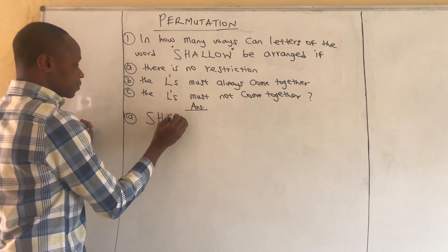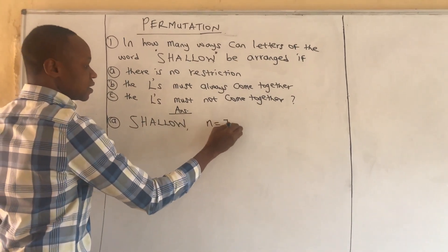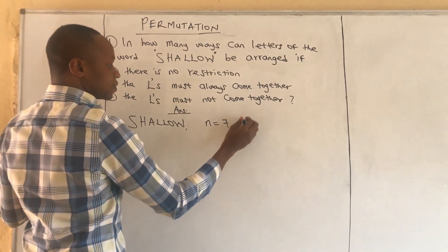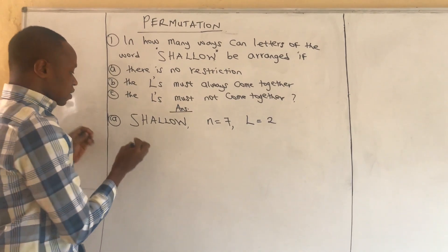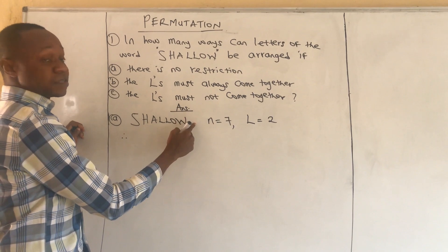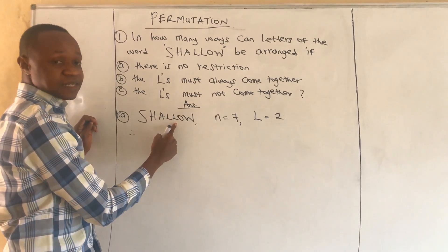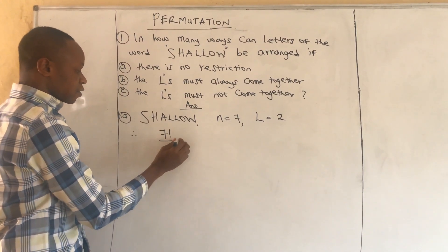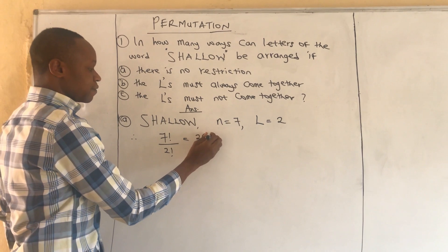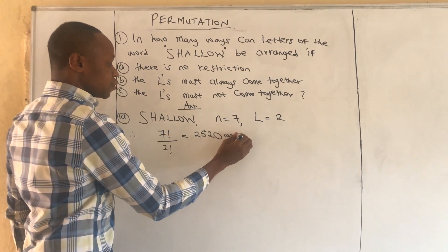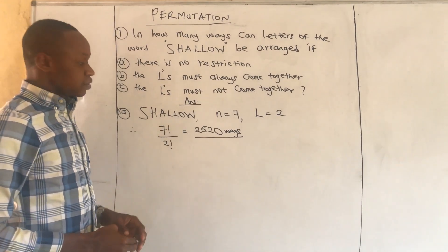Looking at 'shallow', it has seven letters, and out of these seven, L is repeated — L appears twice. To arrange letters of this word without restriction when you have a repeated letter, it is seven factorial over two factorial. Simplifying this gives us 2520. So there are two thousand five hundred and twenty ways of arranging the letters of the word 'shallow'.